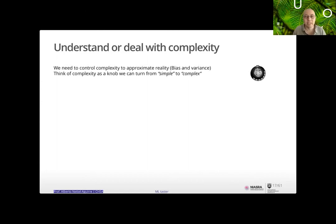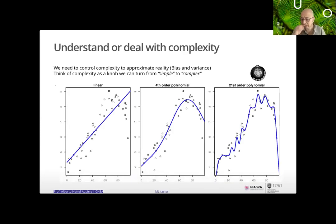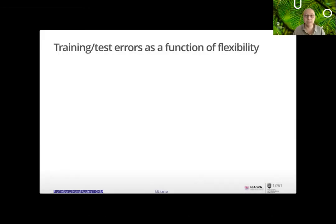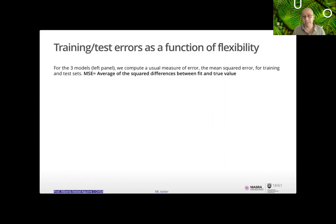Think of a complexity knob you can move. Imagine data points — you could fit them with a line, or a polynomial of degree four, or degree 21. The more complex you get, the closer you seem to the actual data, but you start having more variability. For these three models, we calculate the mean squared error — the average squared difference between the fit and the observed value.